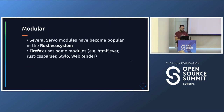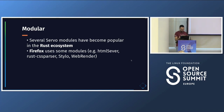Servo is modular. Several Servo modules are quite popular in the Rust ecosystem — for example, if you need to parse HTML, you'll probably use the Servo HTML parser because it's available as a standalone module. You don't need the whole Servo engine. Firefox also uses some modules: the HTML parser, the CSS parser, Stylo (the style resolution phase), and WebRender (the compositing phase that talks directly to the GPU and runs things in parallel). Both Stylo and WebRender are shared between Servo and Firefox.